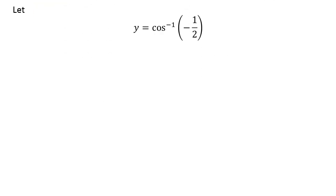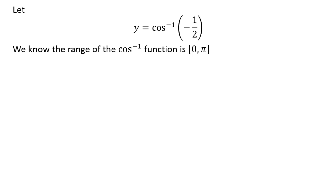Let us assume y is equal to inverse cosine of minus half. We know the range of the inverse cosine function is the closed interval of 0 and pi. So the above statement implies the value of y lies in the closed interval of 0 and pi.